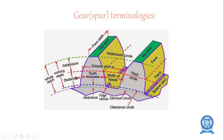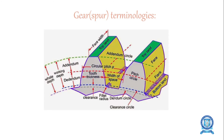Addendum circle is also called the tip circle — it is the circle coinciding with the crest or top of the tooth. Dedendum circle is also called the root circle — it is the circle that coincides with the root or bottom of the gear tooth.